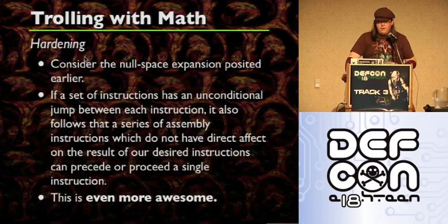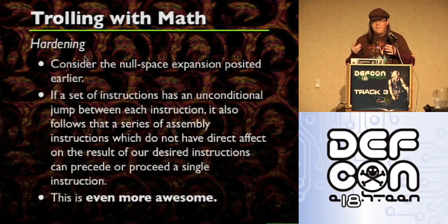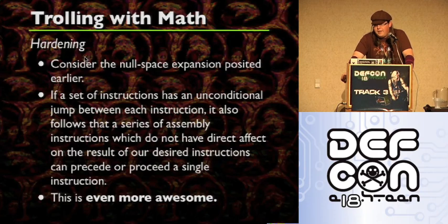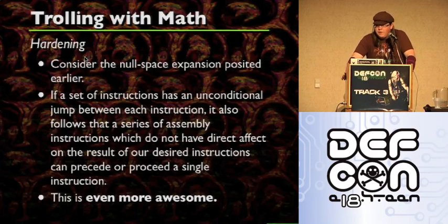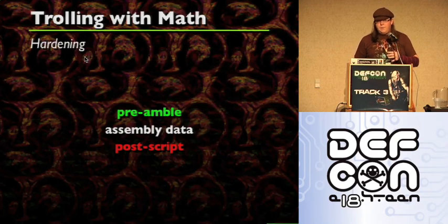So let's consider the null space expansion I talked about earlier. If you have a set of instructions and they have unconditional jumps between every instruction, it also follows that a series of assembly instructions which don't have a direct effect on the assembly can be applied. As long as you write very specific instructions that don't modify the underlying assembly of what you're trying to obfuscate — like if you're trying not to mess with registers — then as long as you maintain the state of every assembly instruction, you're good to go. So you can consider every assembly instruction to be able to be wrapped like this.